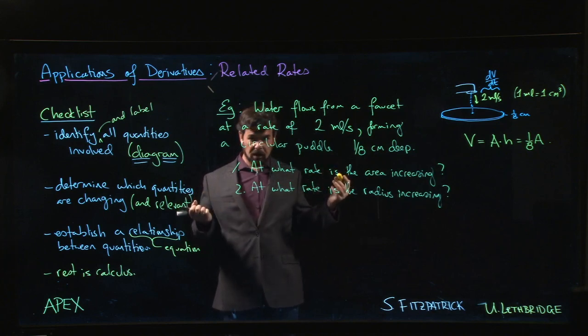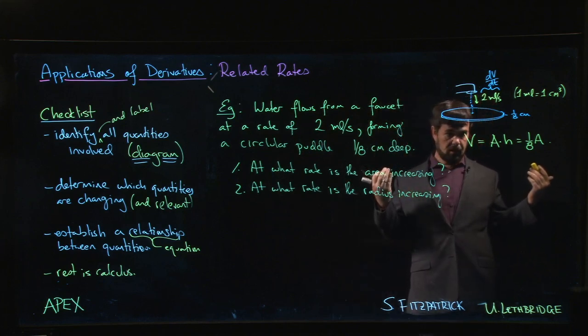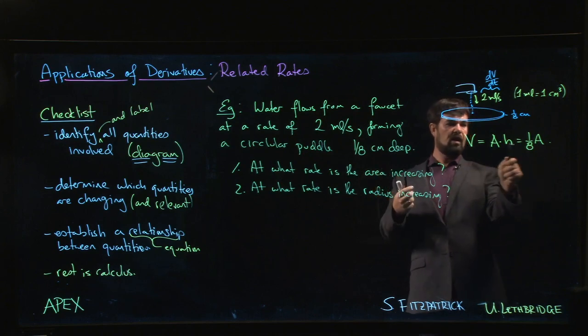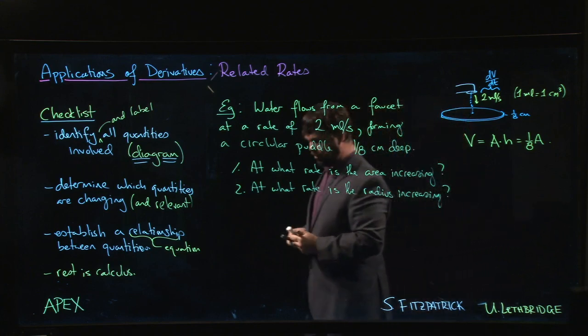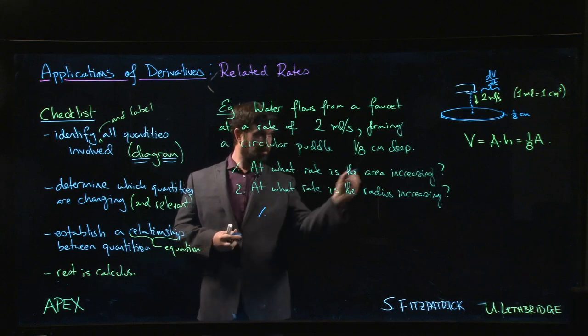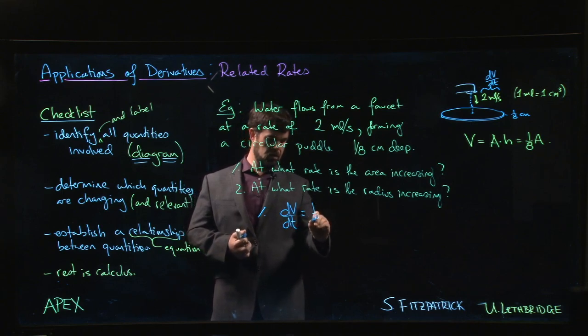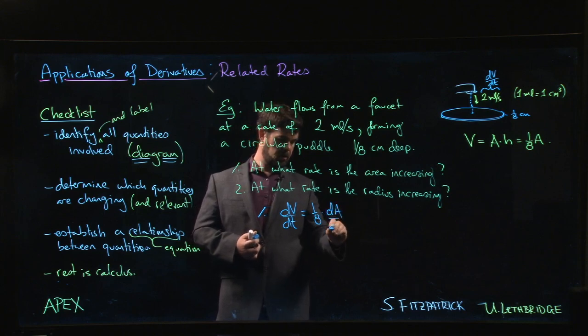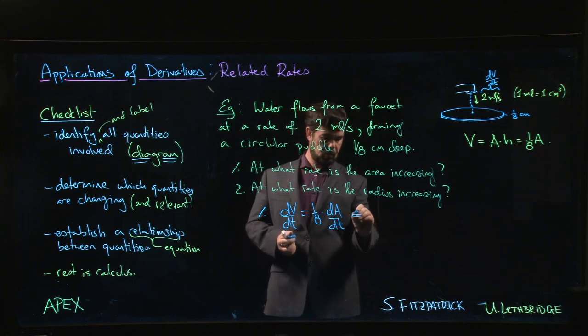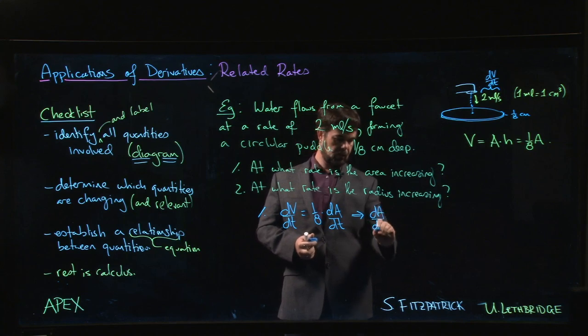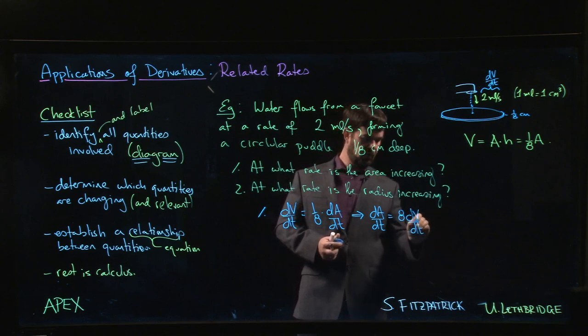In this case, volume equals one over eight times the area. We don't even need to worry about the fact that it's a circle here. The only thing we really need to know is that the depth is constant. The fact that it's a circular puddle doesn't even matter. Taking the derivative of both sides, dV/dt using the constant rule will be one over eight times dA/dt. We know dV/dt, we're interested in dA/dt, so we multiply both sides by eight.